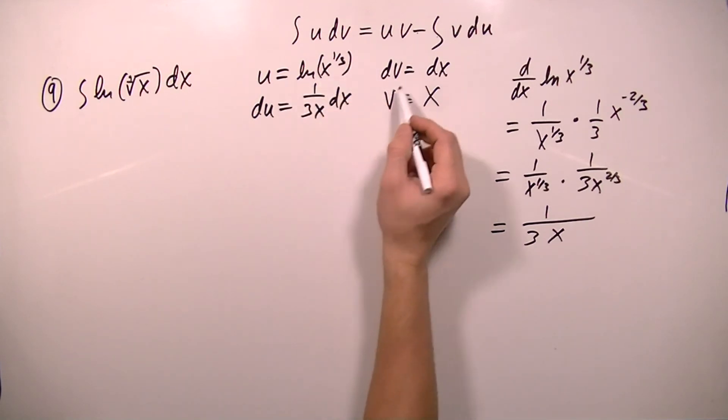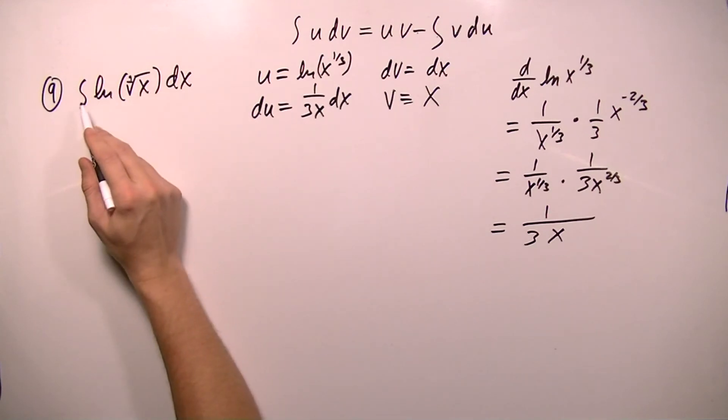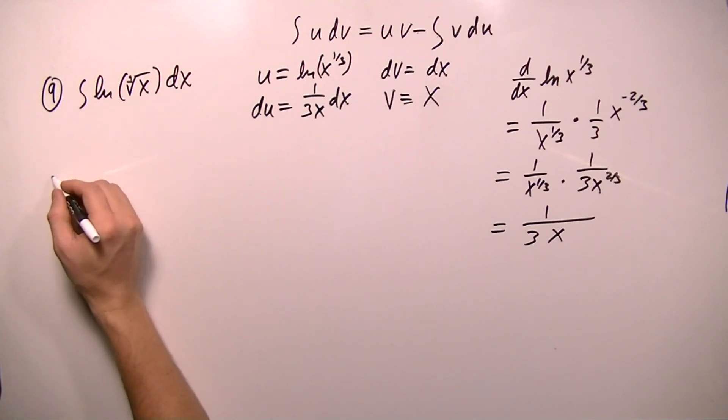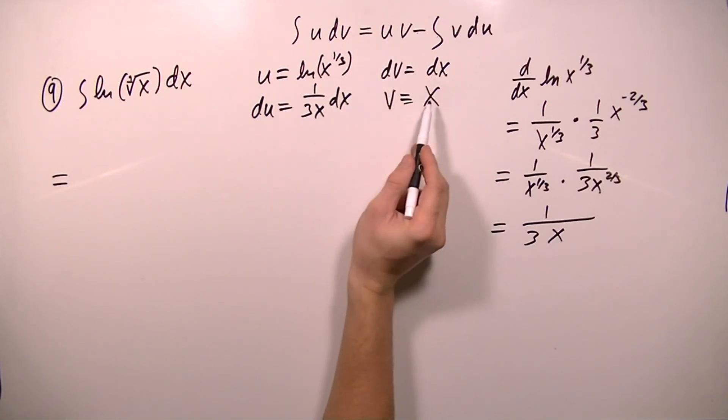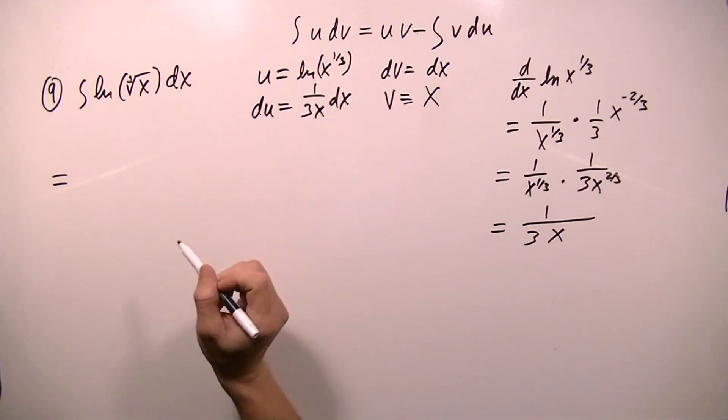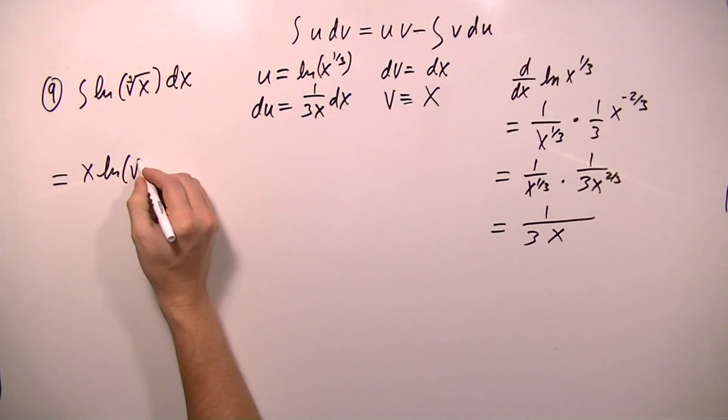Now I can plug these values into this formula and find the integral of udv, which is the integral of ln x to the 1 third power dx. So this will equal, and I start with u times v, so v is x, and then ln x to the 1 third, or the cube root of x.